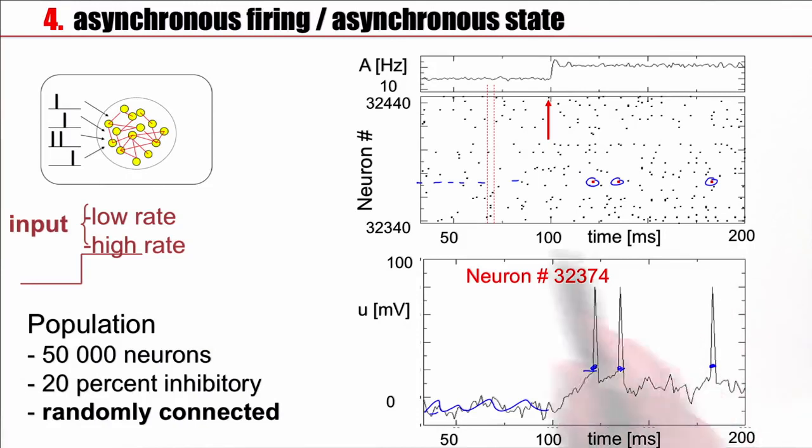Moreover, we are not interested in the spikes of one neuron, but in the spikes of many neurons. So here we average over many neurons. In total, it's a simulation with 50,000 neurons, 40,000 excitatory ones and 10,000 inhibitory ones randomly connected. At this point here, the input has changed from low rate input to high firing rate input.